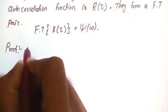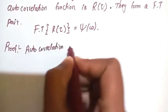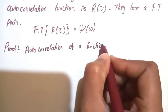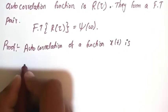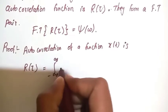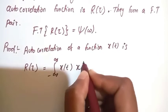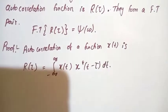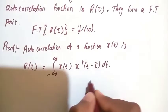We know that the autocorrelation of a function x(t) is given by R(tau) equal to the integration from minus infinity to infinity of x(t) times x-star of (t minus tau) dt.